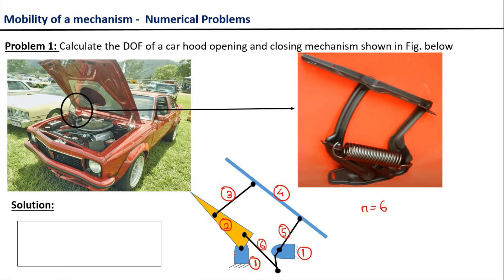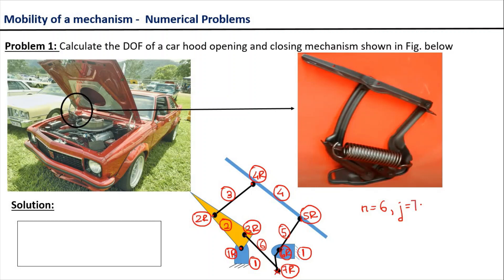Next, we count the number of lower pairs in the mechanism, starting with the lower pair close to the fixed link. We label them 1R, 2R, 3R, 4R, 5R, 6R, and 7R. All the kinematic pairs shown here are revolute pairs, and all revolute pairs are binary in nature. So the total number of lower pairs in the mechanism is equal to 7.